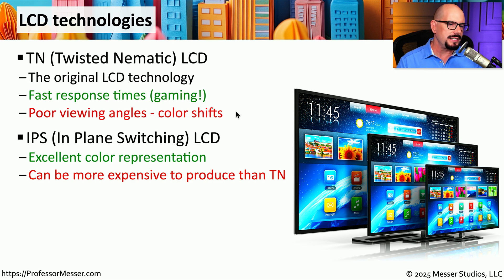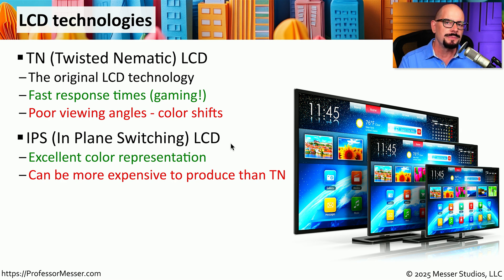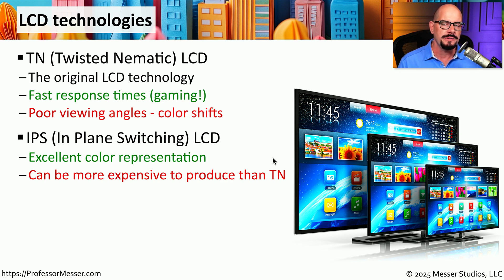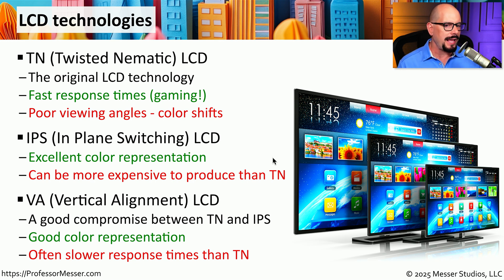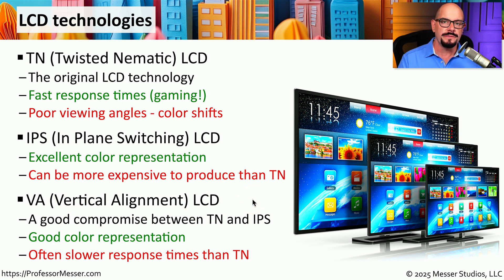A newer style of LCD is the IPS, or in-plane switching LCD. This provides very good color representation, so if you're doing any type of graphics or video editing, this might be a great display for you. But these can be a bit more expensive than the Twisted Nematic version of the LCD, so you may be paying a premium for that excellent color representation. Somewhat in the middle between a Twisted Nematic and an in-plane switching LCD is the VA, or Vertical Alignment LCD. This also has very good color representation, although its response time is not quite as good as a Twisted Nematic display.